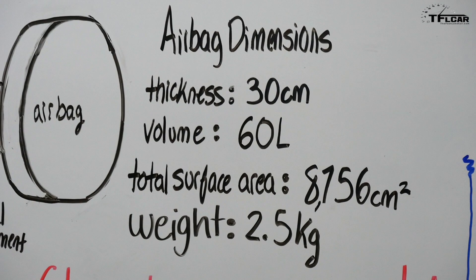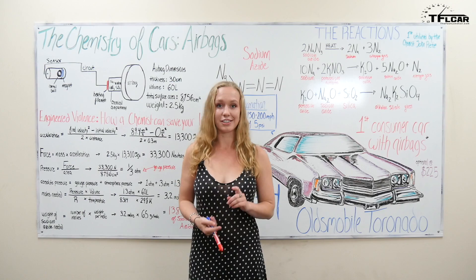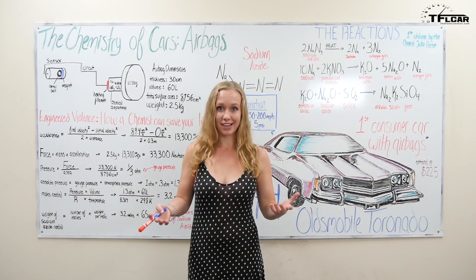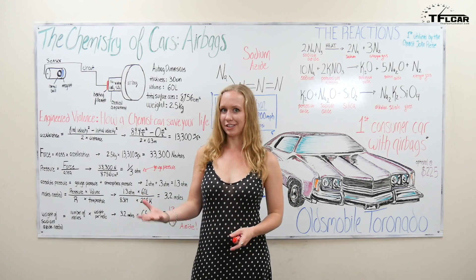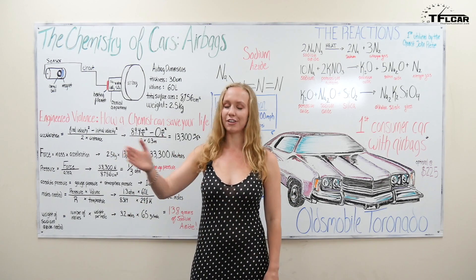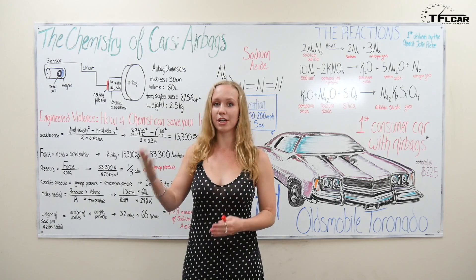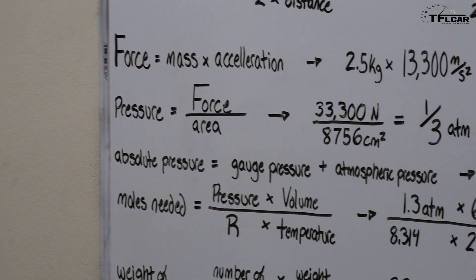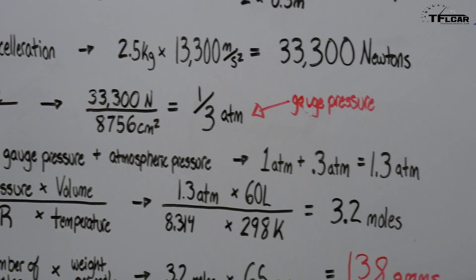We have airbags today that can adjust inflation speed and the pressure to occupant size. So basically you have these little sensors in your seats senses your weight and then it can figure out what's the ideal pressure for this to inflate to which is pretty darn cool and an excellent safety innovation.